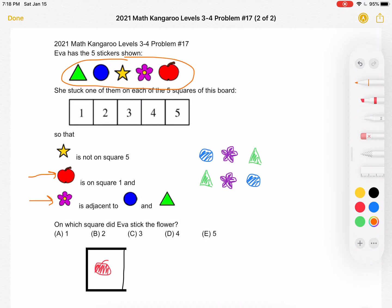Now, the last piece of information we know is that the star is not on square five. So one is already occupied by the apple. So we have positions two, three, and four possible for the star.